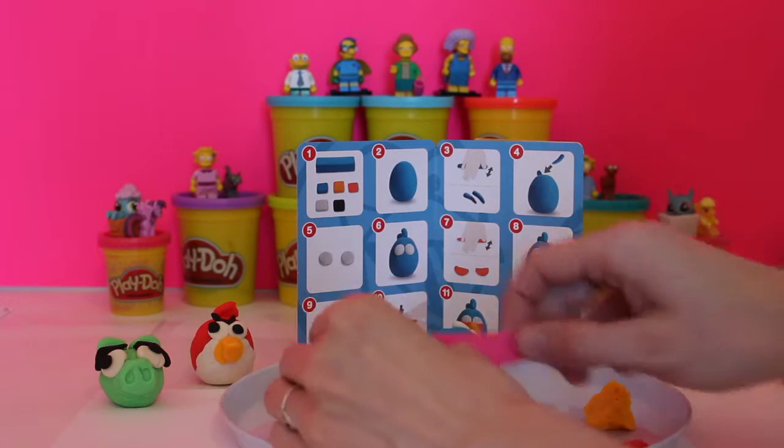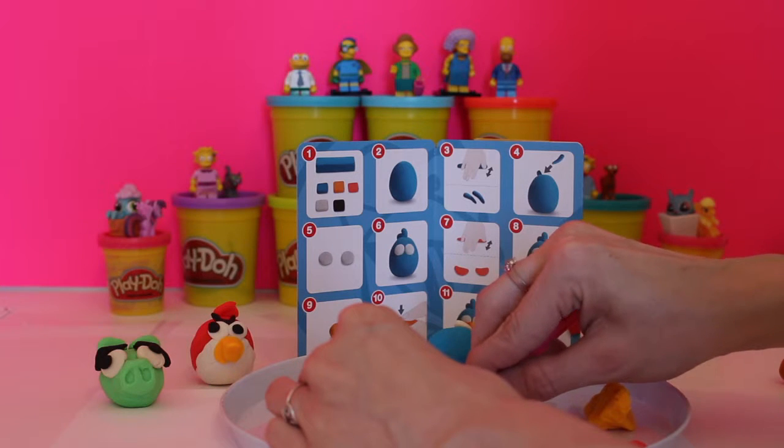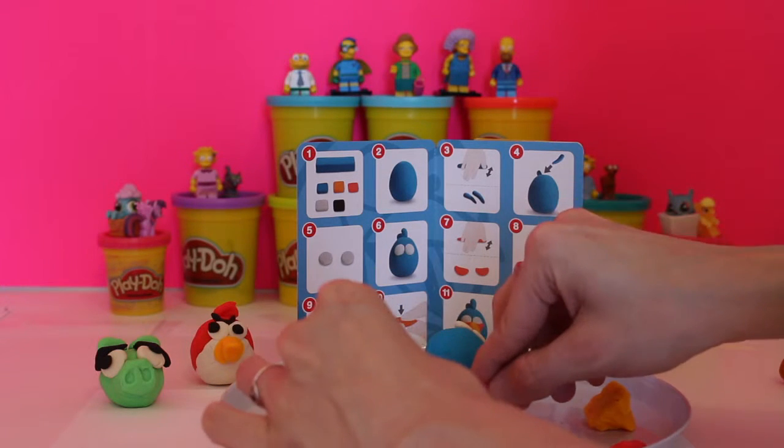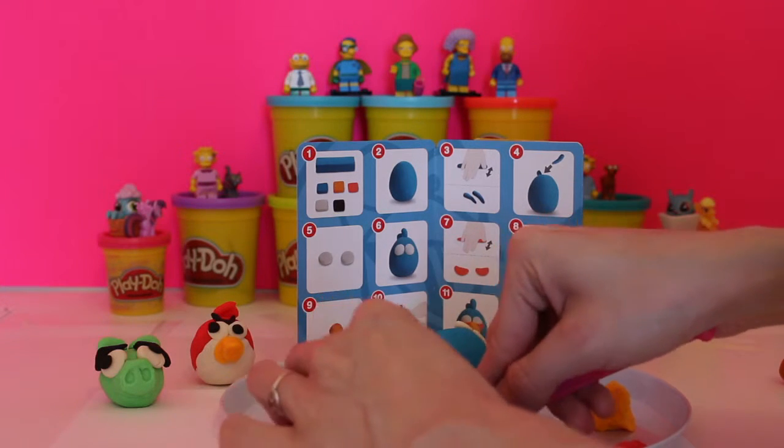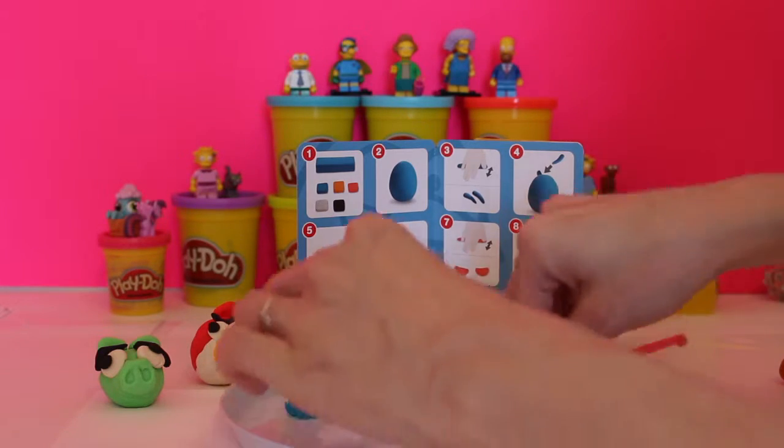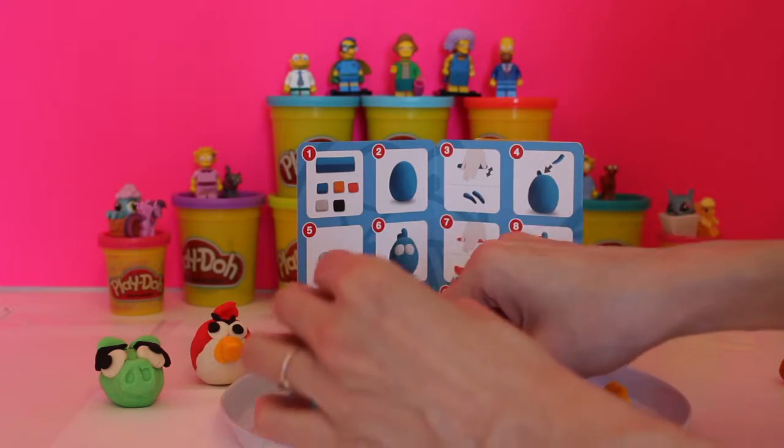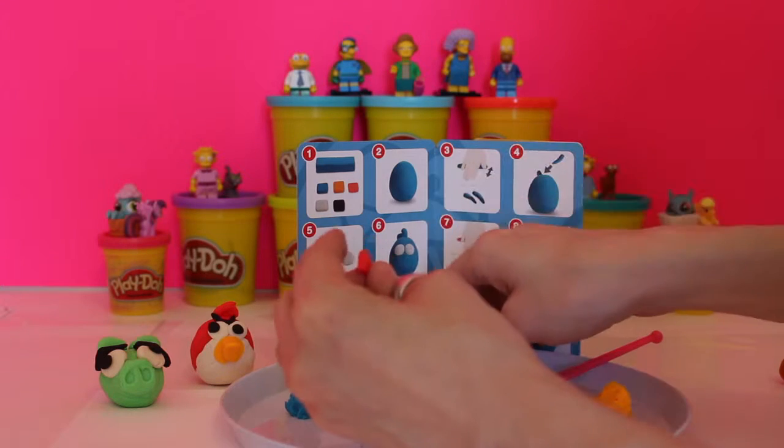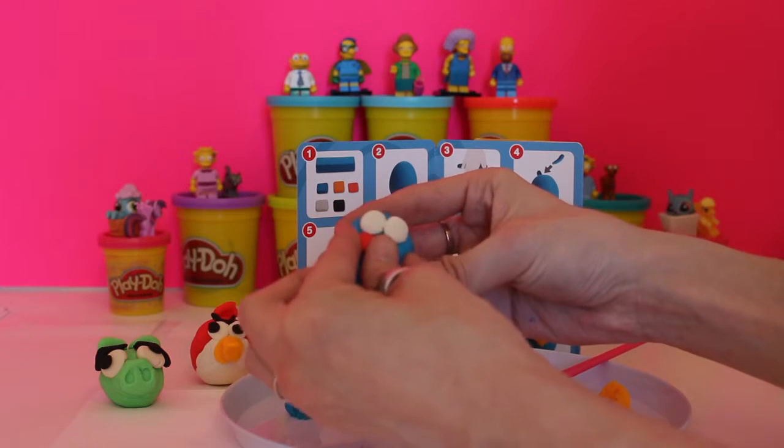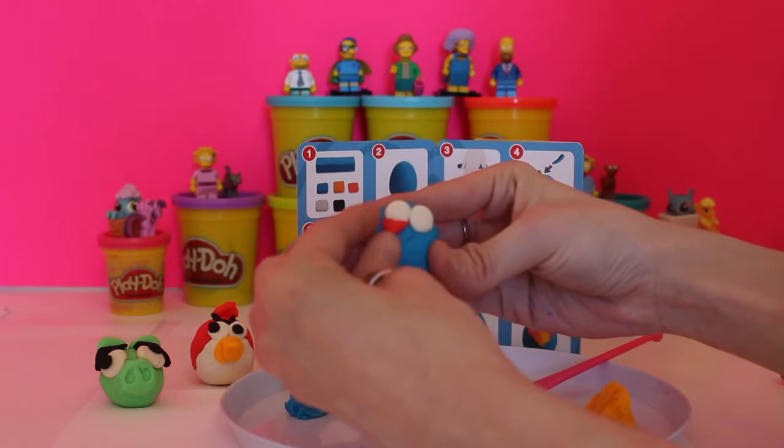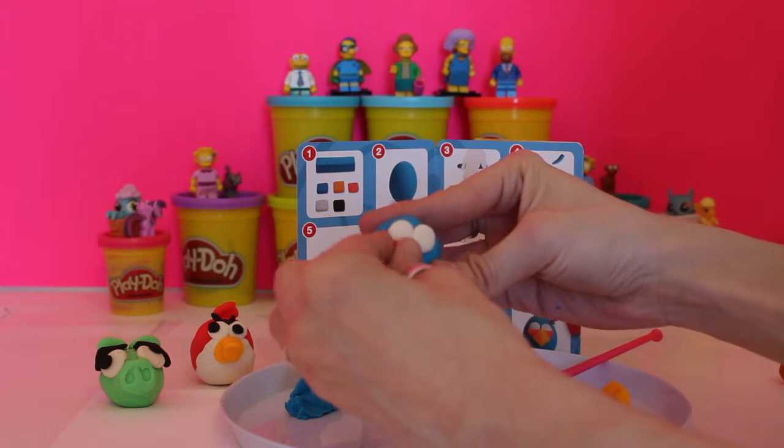So we'll use our trusty knife that comes with it. Just like this. And we have two little triangles. They go just underneath his eyes, just like that.